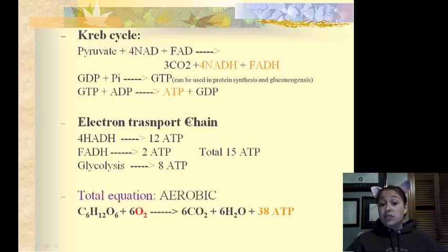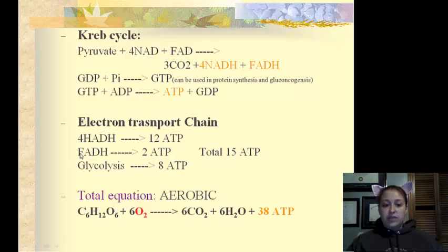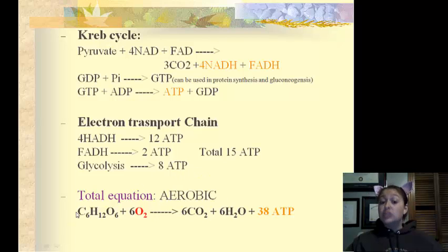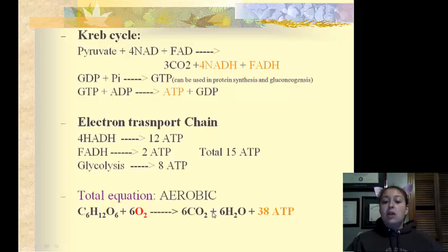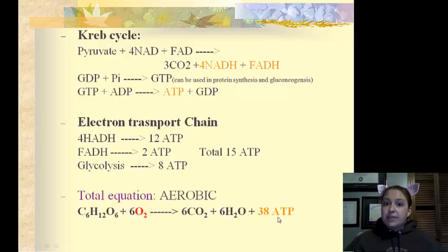Next we have our electron transport chain. For every 4 NADH, we get 12 ATPs. For every 1 FADH, we get 2 ATPs. The overall equation — you must know this — glucose plus oxygen, which means it's going to be aerobic, gives us carbon dioxide, water, and 38 ATPs. 38! That's a lot! But where did they come from? Let's find out.